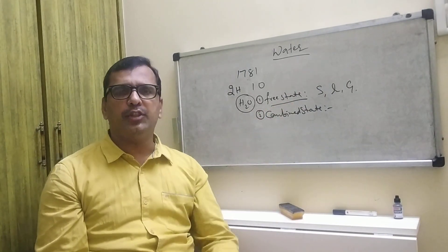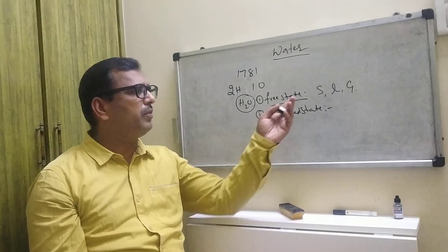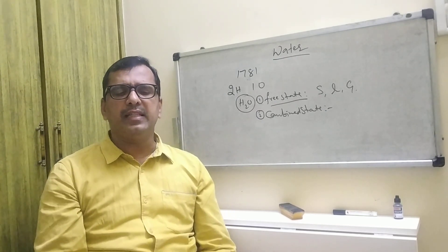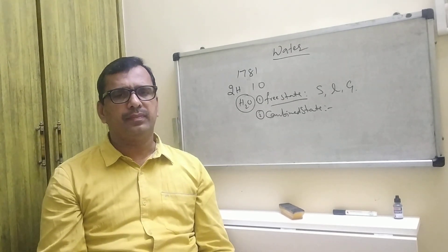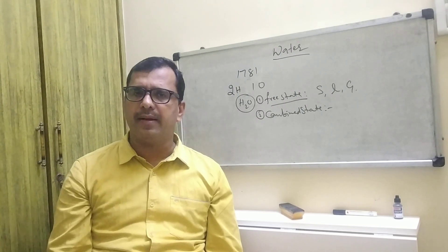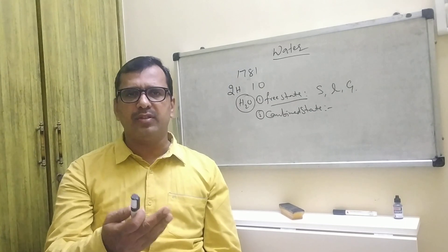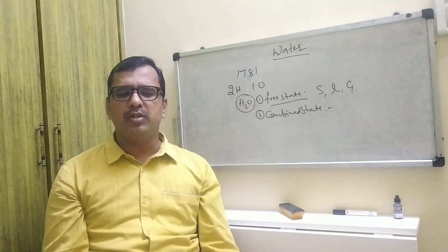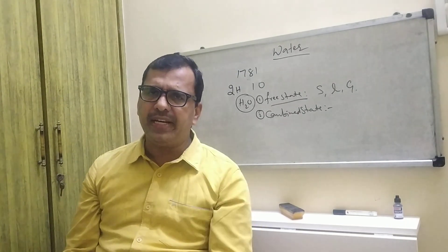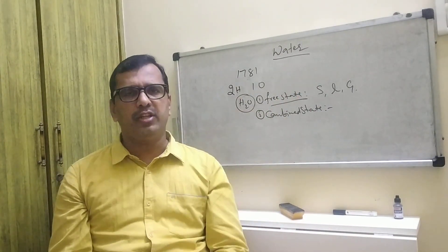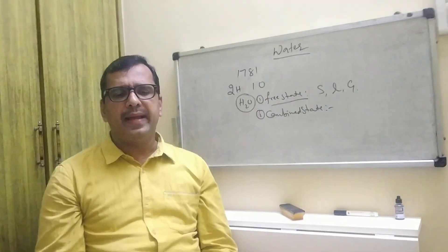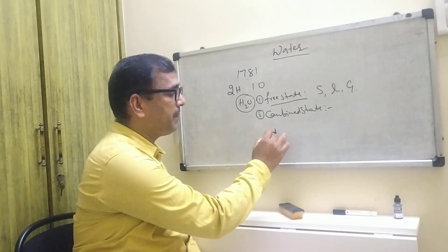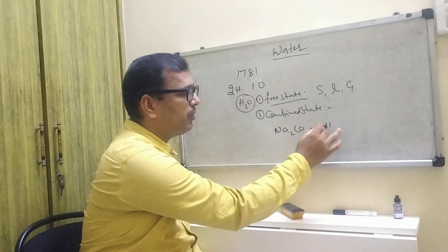In the solid state, the large amount of fresh water is in the form of ice or snow. In the liquid state, it is generally available as groundwater or surface water such as rivers. In the gaseous state, it exists in the form of water vapor.